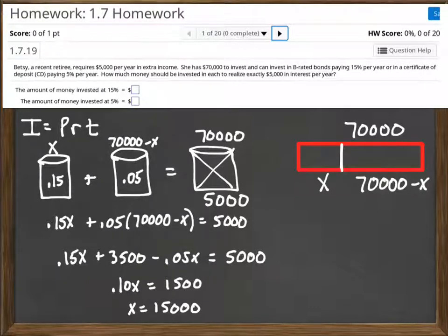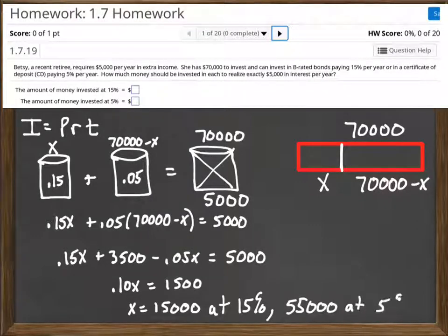Now remember, X, as I set it up in the problem, was the amount of money at 15%. So I'm going to have to take 15,000 of the 70,000 and put it into the 15%. And then the other part of the question that this problem asks is how much do we put at 5%? Well, the 5% was 70,000 minus X. So we do that, 70,000 minus 15,000. We find out that there's 55,000 at 5%. Okay, hopefully this helps you as you're working through these problems.